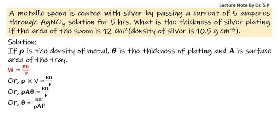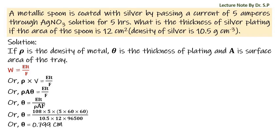Thickness theta equals chemical equivalent 108, into current 5, into time 5×60×60 (time converted into seconds), divided by density 10.5, into area 12, into Faraday constant 96500. Therefore, thickness theta equals 0.799 centimeters. This is the required thickness of silver plating.